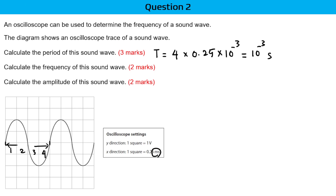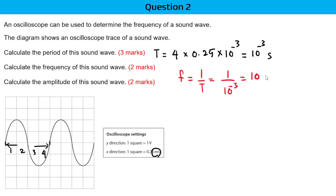Calculate the frequency of the sound wave. The relationship between frequency and period is F equals 1 over T, which means 1 over 10 to the power of minus 3. So the frequency is 1,000 Hz.